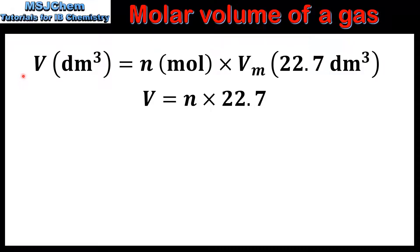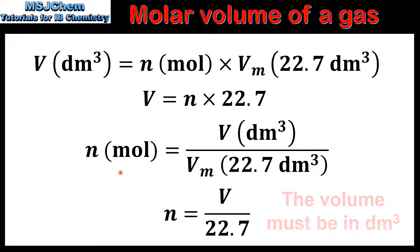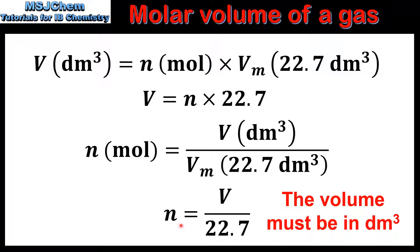Next we'll look at equations that can be used to calculate either the volume or the amount in moles of a gas. The first equation is used to calculate volume: multiply the amount in moles by the molar volume. An easy way to remember this is V equals n multiplied by 22.7. Note that this equation will give you the volume in decimetres cubed. The second equation is used to calculate the amount in moles: divide the volume by the molar volume, or N equals V divided by 22.7.